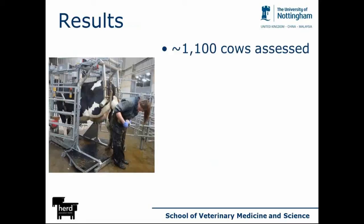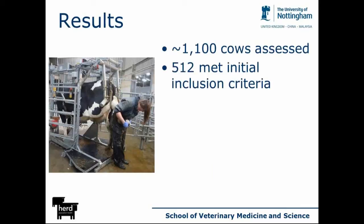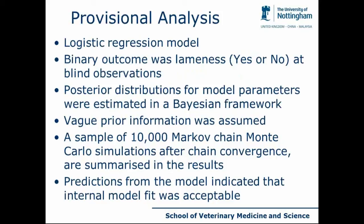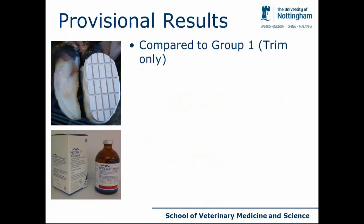In total, 1,100 cows were mobility scored on those farms. Throughout the 12-month study period, 512 met the initial inclusion criteria of going identifiably lame following a period of non-lameness. Of those 512, unfortunately only 183 actually met all enrollment criteria. These are very difficult studies to run, and we only managed to enroll 183 — although it has been enough for our purposes — across those five farms. We've now conducted some provisional analysis on the dataset using a multi-level model conducted in a Bayesian framework.